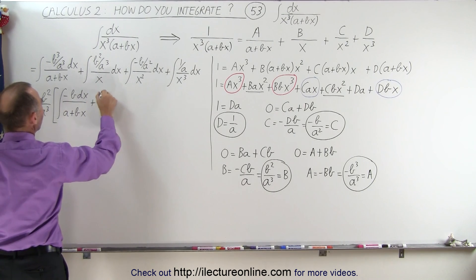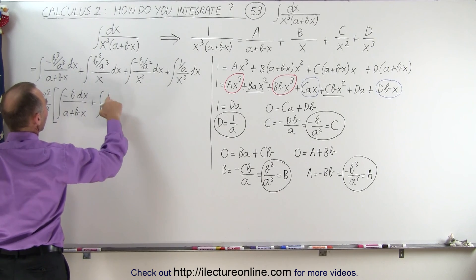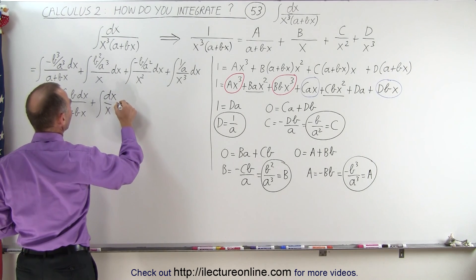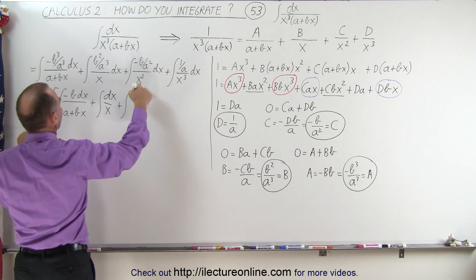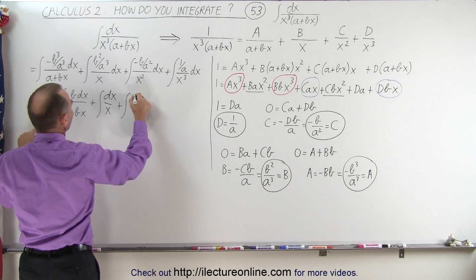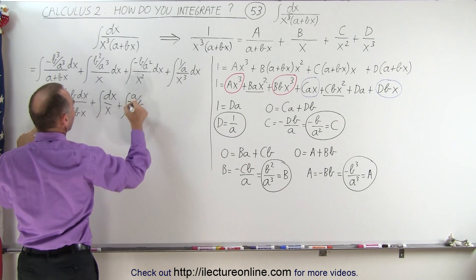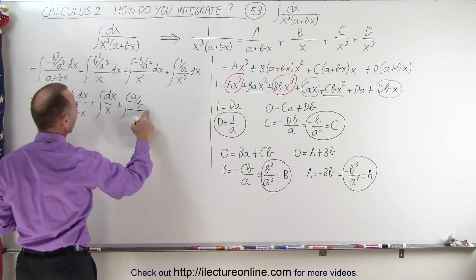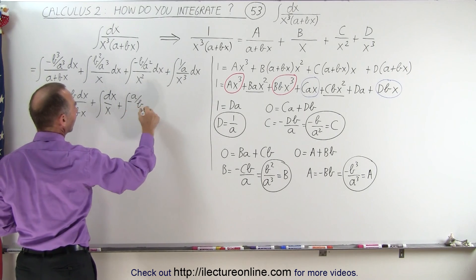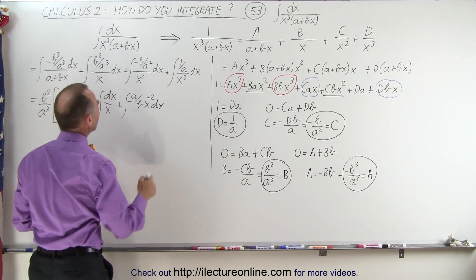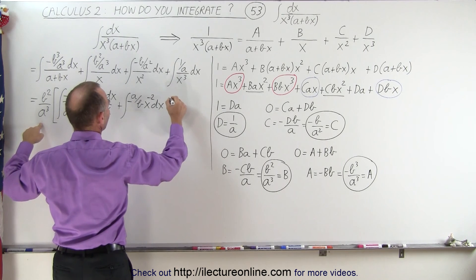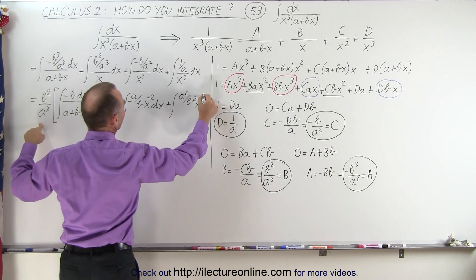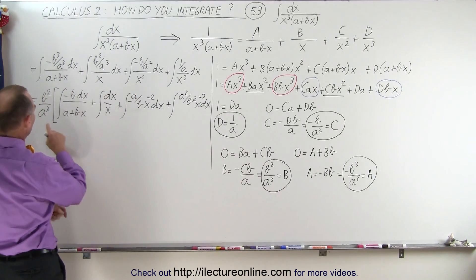We end up with plus the integral of 1 over x dx, and that's easy to integrate. Then, if we factor out b squared over a cubed, we end up with a over b — and a negative — because when we multiply this we get b in the numerator. So we write that as x to the minus 2 dx. And here we have 1 over a, so when we factor this out we get plus a squared over b squared times x to the minus 3 dx. When we multiply, the b squares cancel out and we end up with 1 over a in the denominator.